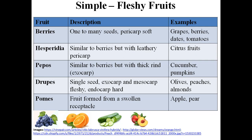There are different types of fleshy fruits when they are simple. One example is berries, the second is hesperidia — oranges are an example — peppers, cucumber for pepos, peaches for drupes, and apple for pomes.